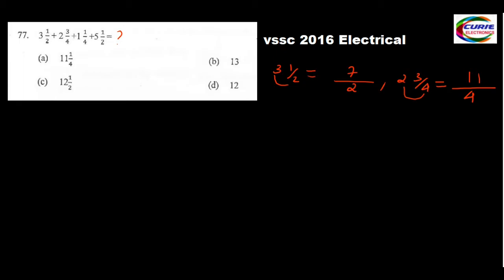Next is 1 and 1/4. Write the denominator just like that, multiply these two: 4 times 1 is 4, plus 1 is 5. So that gives 5/4. And one more: 5 and 1/2. Write the denominator, multiply: 2 times 5 is 10, plus 1 is 11. So that gives 11/2.